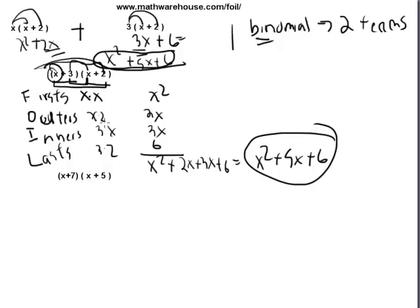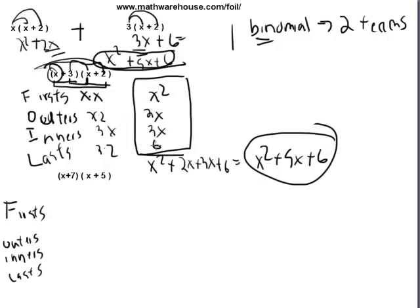FOIL is just a way to remember what you do. You multiply the firsts, the outers, the inners, and the lasts. So let's now do the bottom problem here. Remember we're going to do the firsts, the outers, inners, and lasts. And what we do is, we're going to multiply these, and then at the end, we add. We added the x squared plus 2x plus 3x, just like we added in the top when we did the double distributive method.